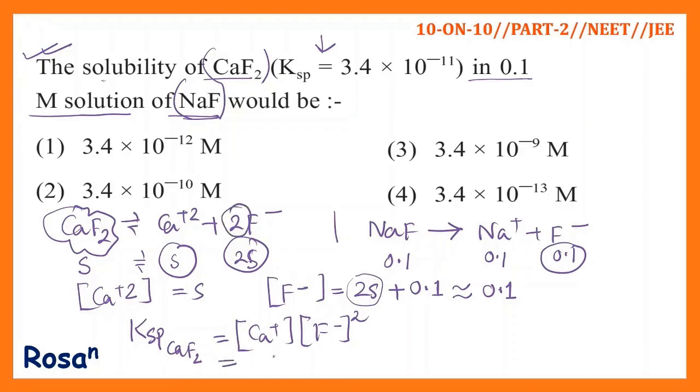Therefore, that equals S times 0.1 squared, which equals the solubility product given here, 3.4 times 10 to the power minus 9.